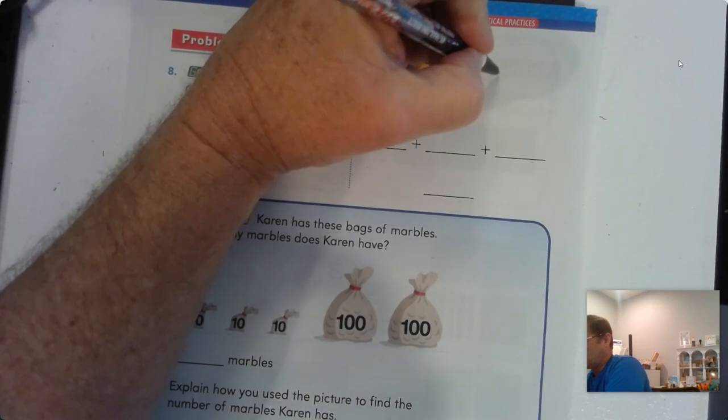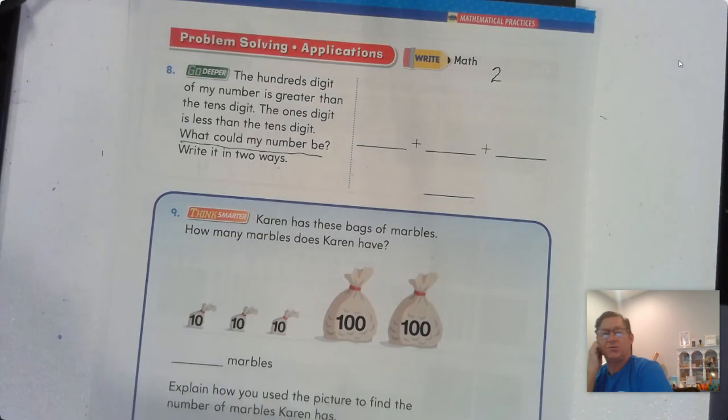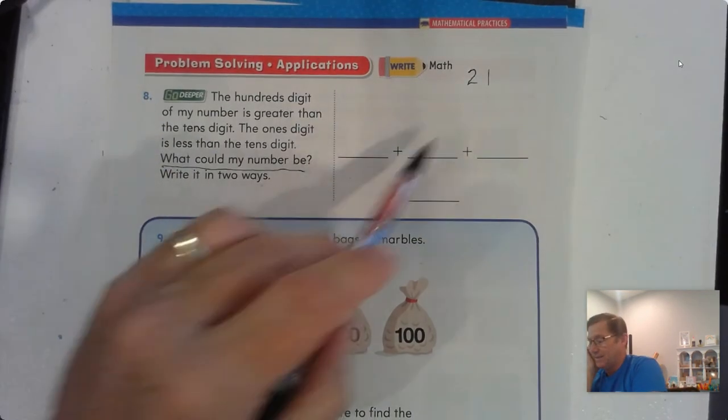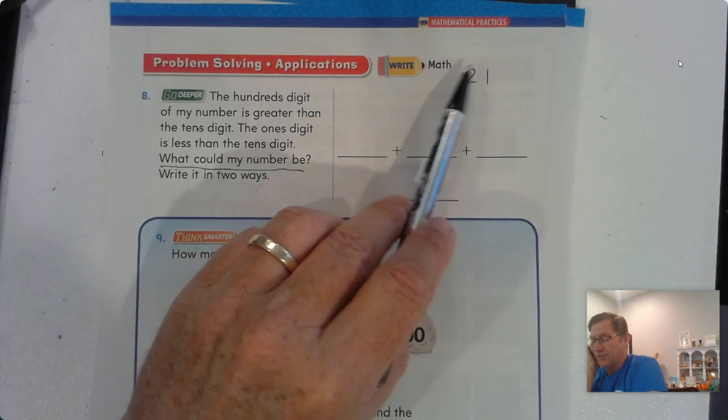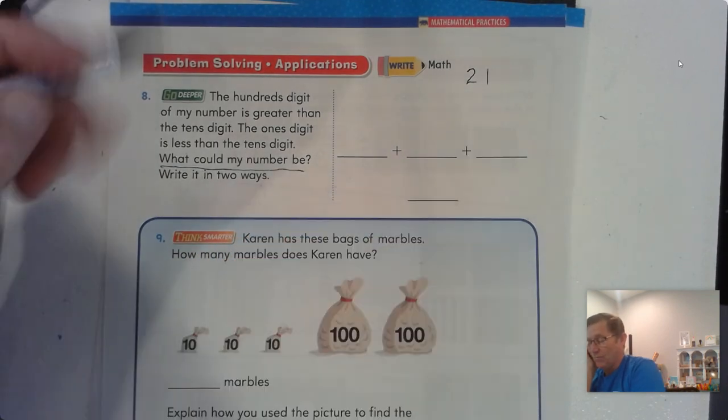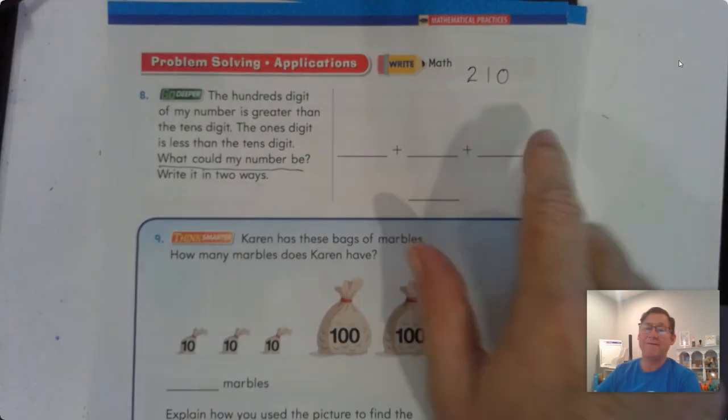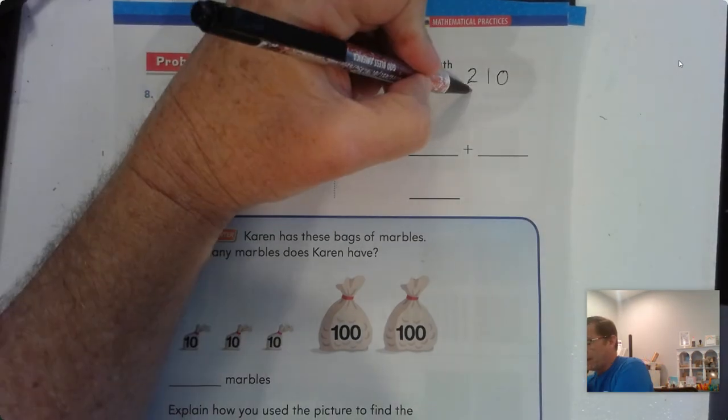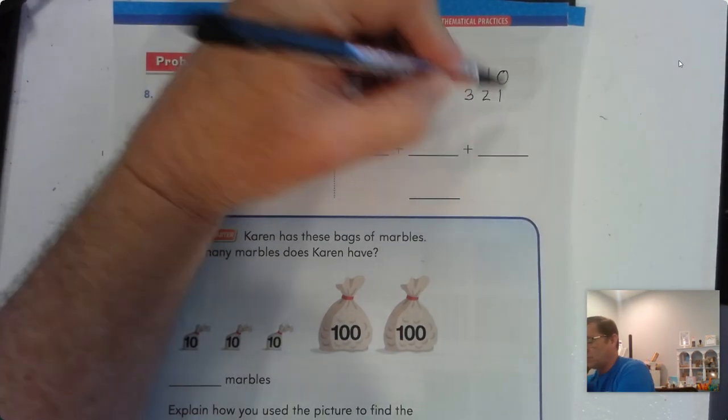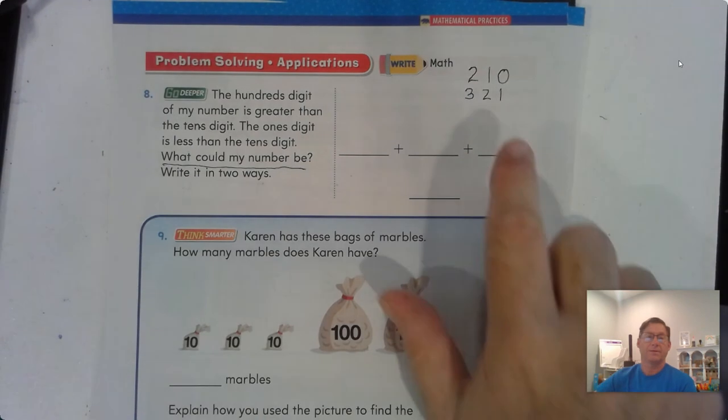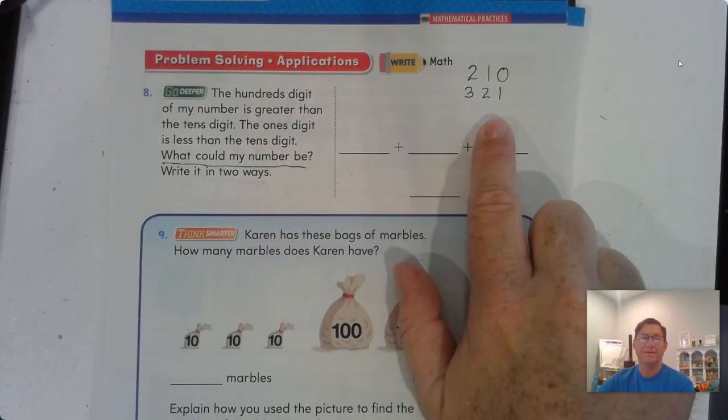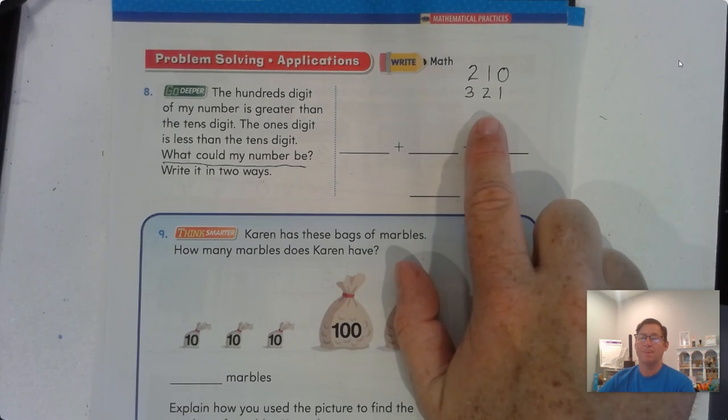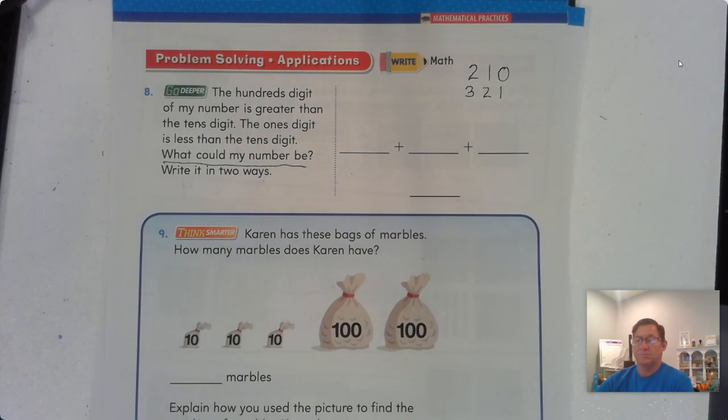Okay, well, let's say I had 2 hundreds. Well, then that would mean the tens would have to be 1, because that's the only way to make the hundreds bigger than the tens. But it says then the ones is less than the tens, so I could have that number, right? I could have 210. Could I have 321? Is the hundreds number greater than the tens? Yes. And is the ones digit less than the tens? Yes.